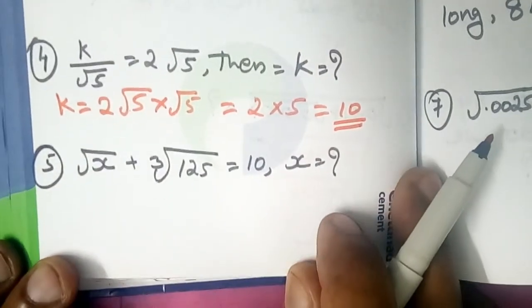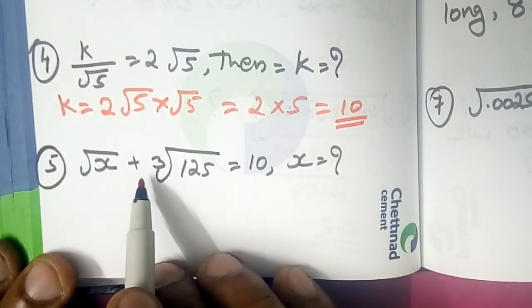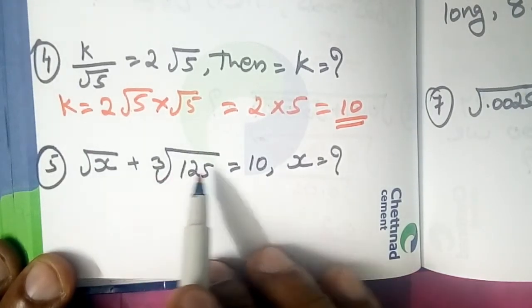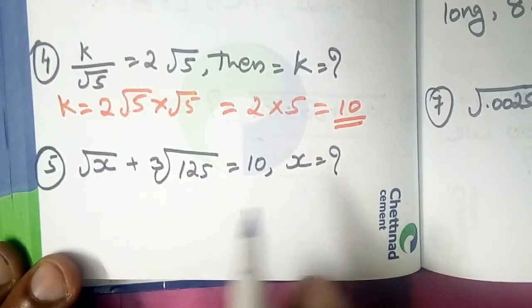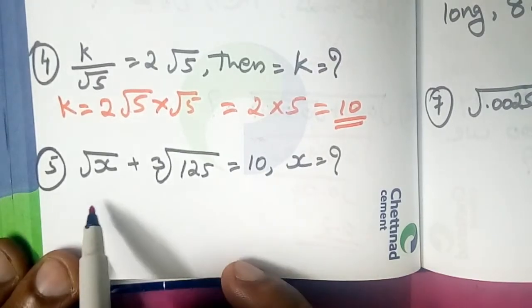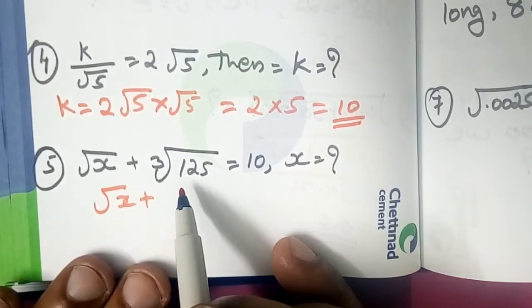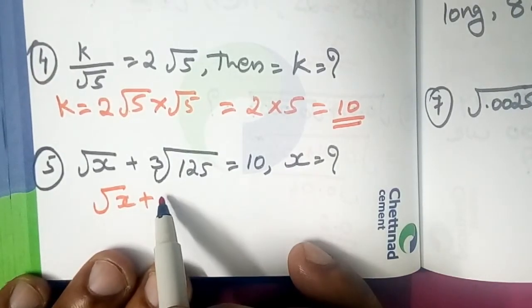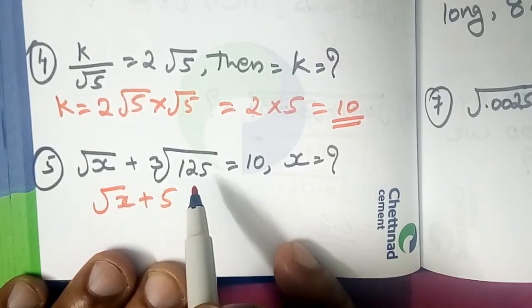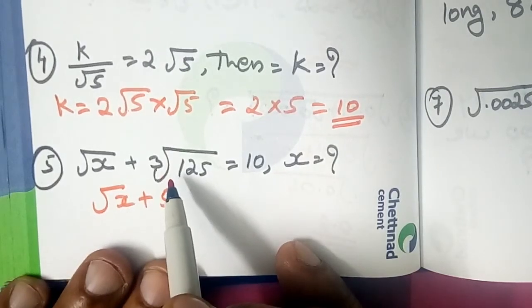Question 5: root x plus cube root of 125 equals 5. What is x? Now, root x plus cube root of 125. 5 into 5 and 5. The cube root of 125 is equal to 5.